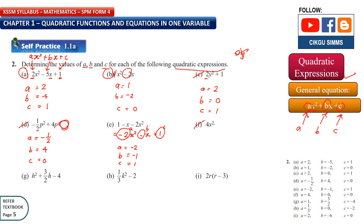For question 2f, you just have x squared. So a is 4, and you don't have x or a constant, so b and c must both be 0.